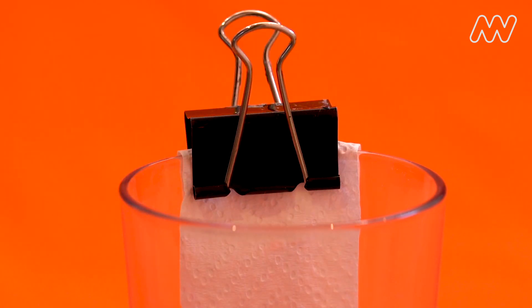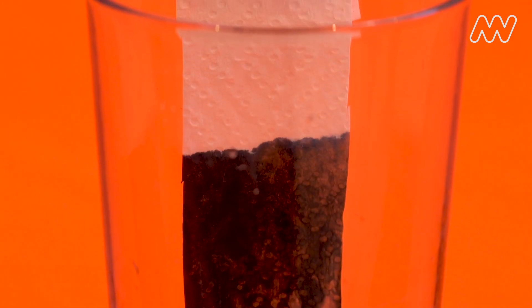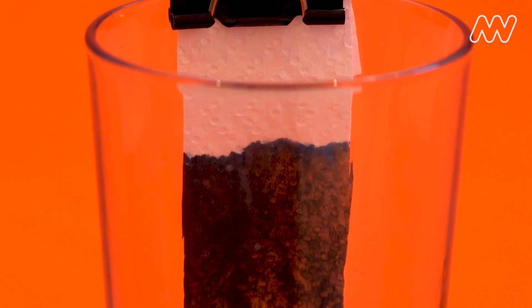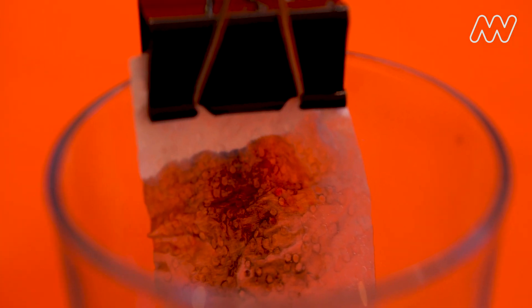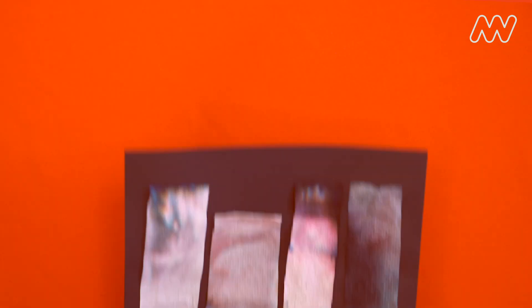Watch the water slowly creeping up the paper and notice what happens as the black ink starts to move up the paper. Wait until the ink has made its way to the top of the paper strip. How many colors can you see now? Do any colors travel further than the others?